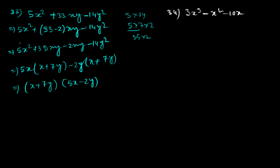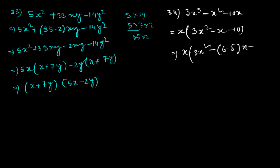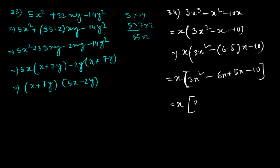Question 34: 3x³ minus x² minus 10x. Whatever polynomials we are doing are quadratic, but this one is cubic. So first of all take x common: x(3x² minus x minus 10). Factoring 3x² minus x minus 10 using 6 minus 5: x(3x² minus 6x plus 5x minus 10). Taking 3x common gives (x minus 2), taking 5 common gives (x minus 2). The answer is x(x minus 2)(3x plus 5).